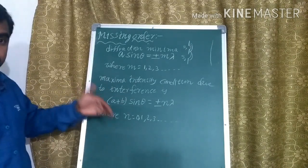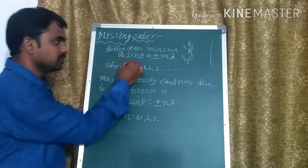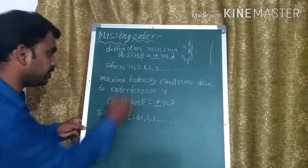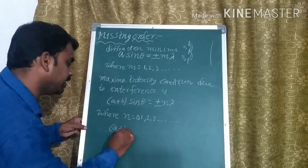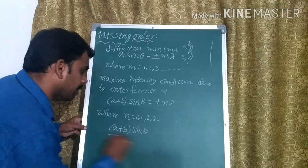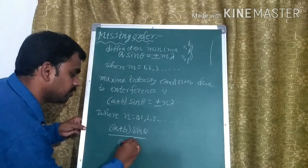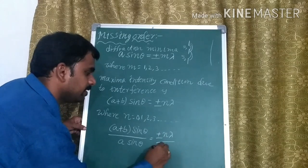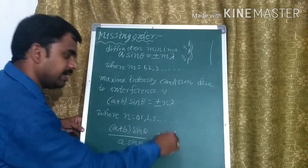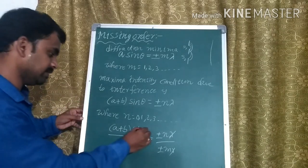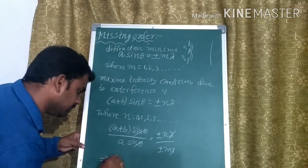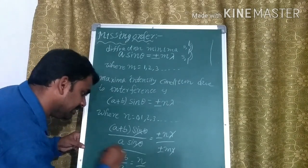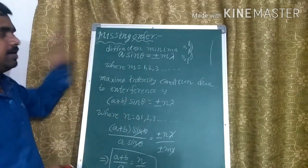Now, what are the orders we are going to miss? Regarding that, how do we use these two equations: if we divide (A + B)·sinθ by A·sinθ, that equals ±Nλ divided by ±Mλ. Lambda and sin θ cancel, which gives (A + B) / A = N / M. This is the condition for the missing order.